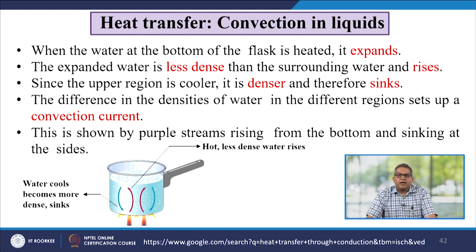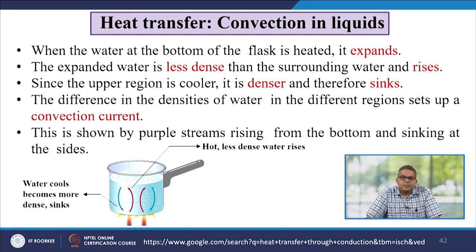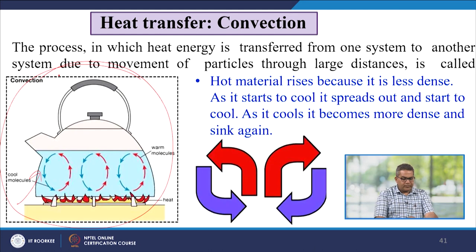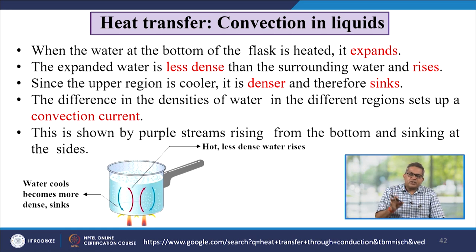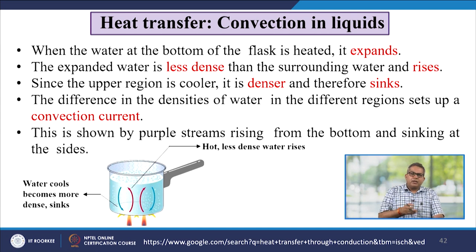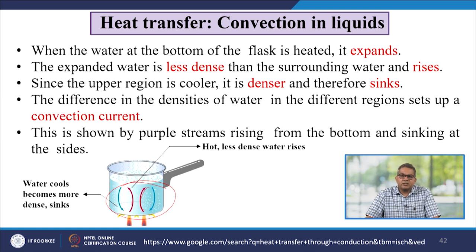Convection in liquids: when water at the bottom of a flask is heated, it expands and becomes less dense than the surrounding water, and rises. The upper region is cooler and denser, so it sinks. The difference in densities of water in different regions sets up a convective current, visible as streams rising from the bottom and sinking at the sides.